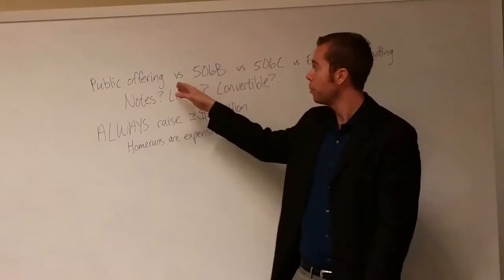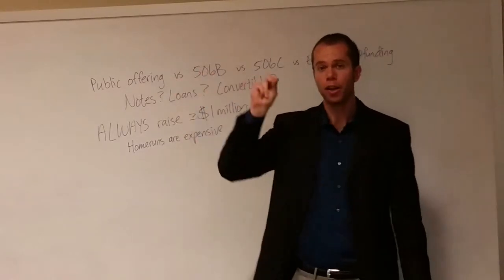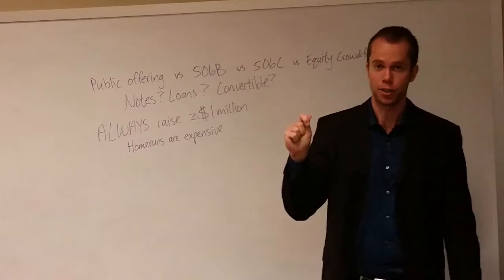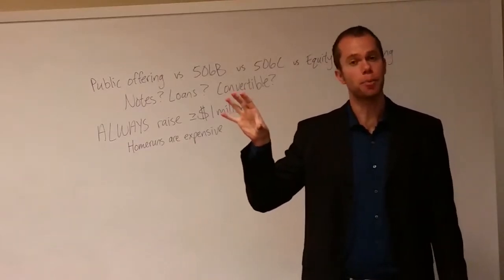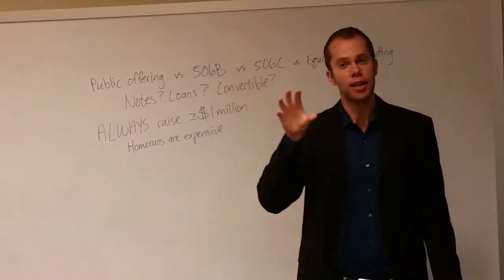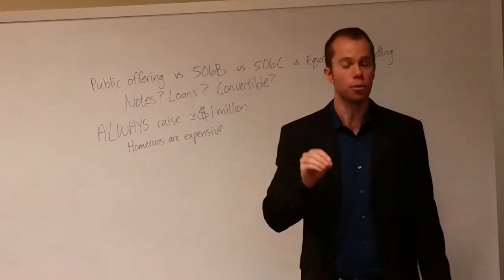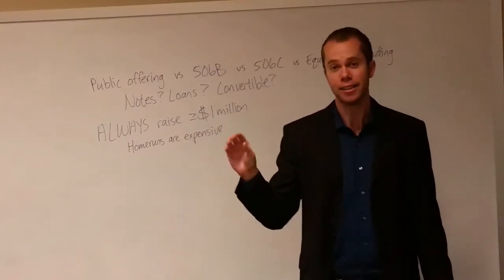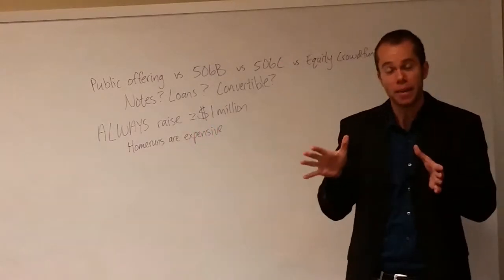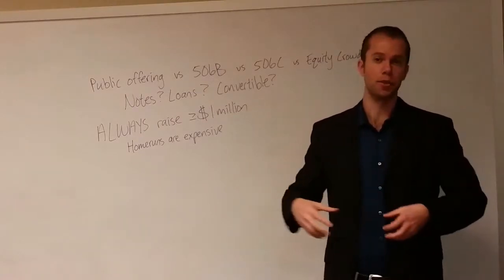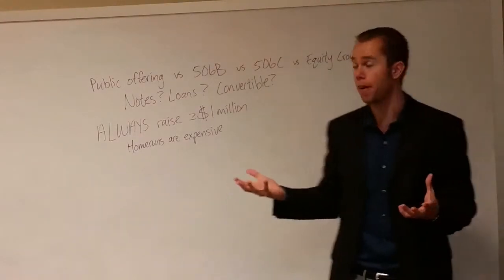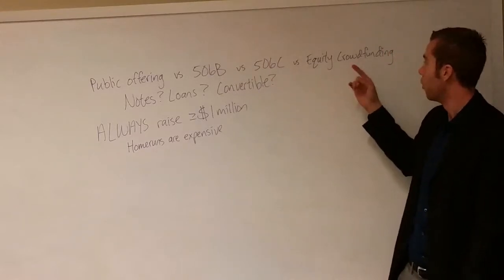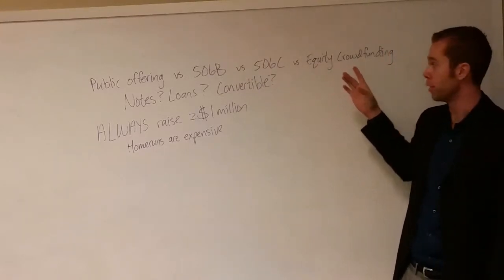To not do a public offering you need to fall under a certain exemption. Public offerings are so expensive because you really have to support and do lots of due diligence to such an intense level to get there. So to be exempt from following those tons of rules you have to file as 506B, 506C, or equity crowdfunding.